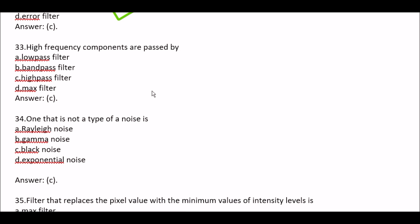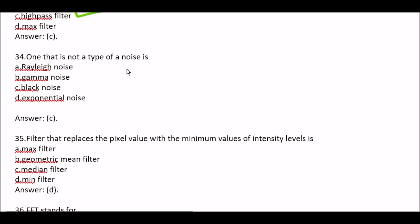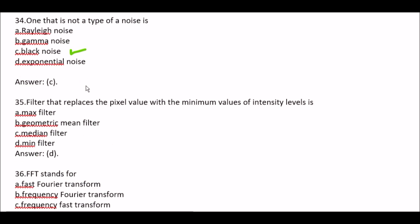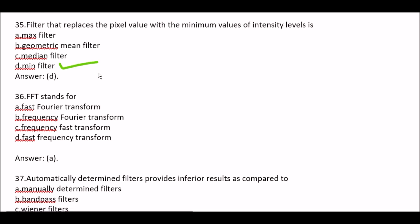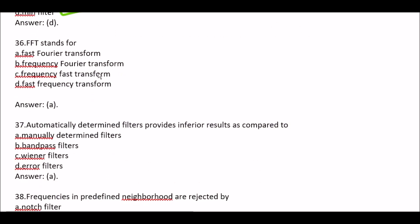Question 33: High frequency components are passed by — Option A Low pass filter, Option B Band pass filter, Option C High pass filter, Option D Max filter. Right option is Option C, High pass filter. Question 34: One that is not a type of noise is — Option A Rayleigh noise, Option B Gamma noise, Option C Black noise, Option D Exponential noise. Right option is Option C, Black noise is not a type of noise. Question 35: Filter that replaces the pixel value with the minimum values of intensity label is — Option A Max filter, Option B Geometric mean filter, Option C Median filter, Option D Min filter. Right option is Option D, Min filter.